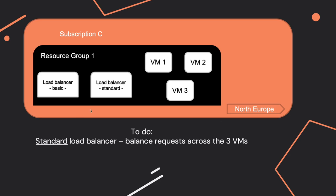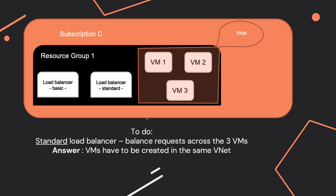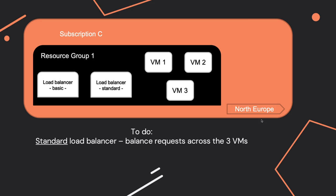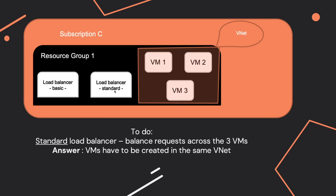The situation is a bit different if you want to use the standard load balancer. Remember: if you want to use the basic load balancer, the VMs have to be in the same availability set or the same VM scale set. Whereas if you want to use the standard load balancer, the three VMs need to be in the same VNet.